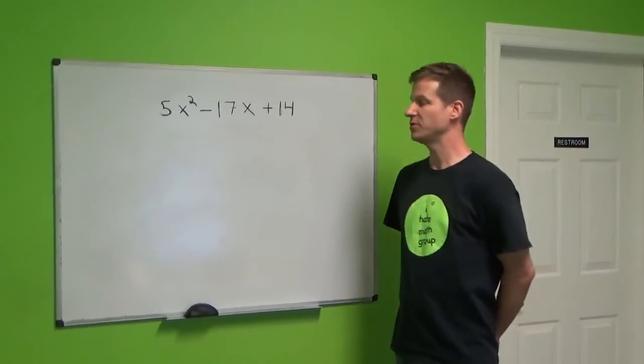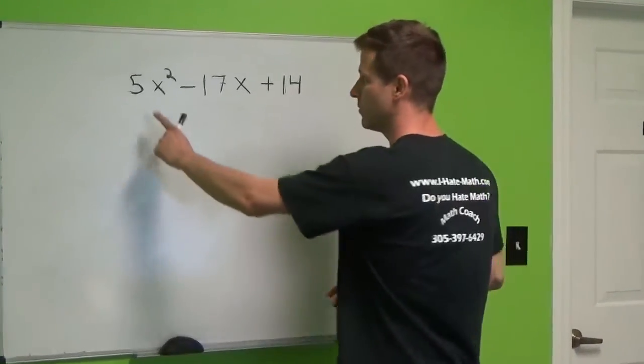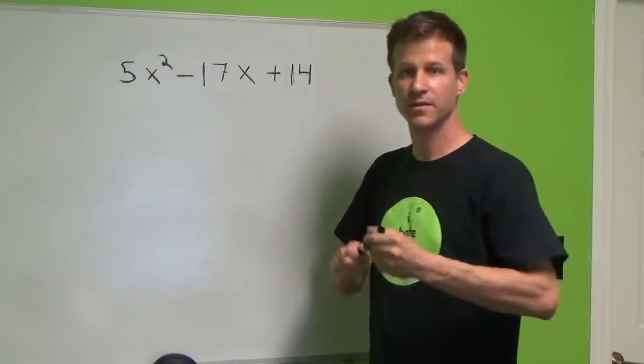Hi, this is Peter from I Hate Math, and we're going to do a factoring problem. Very easy, but this is a little different. We have a number in the front. When that happens, we're going to do what we call the bridge. This is how you do it.